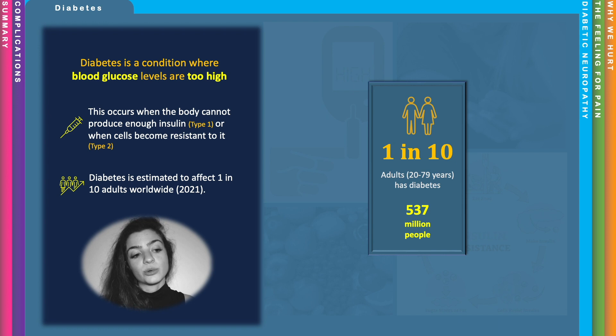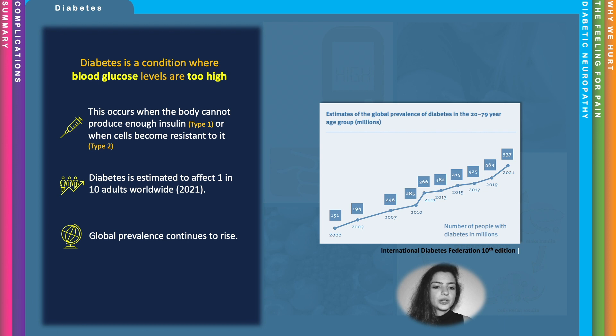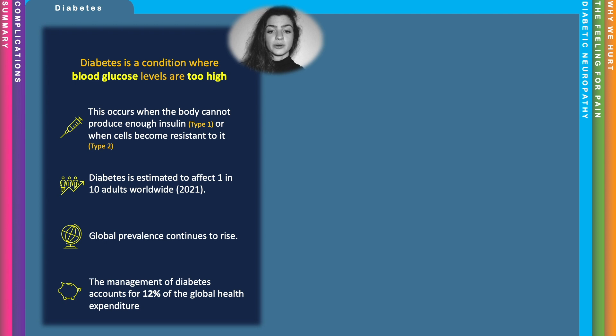Diabetes is becoming increasingly common — it currently affects 1 in 10 adults, and prevalence rises pretty quickly. We can see here how quickly the number of the diabetic population increased in just 20 years.